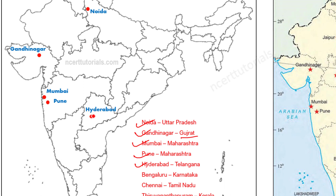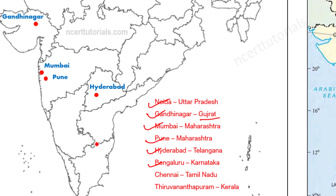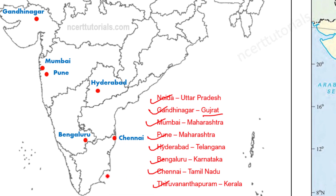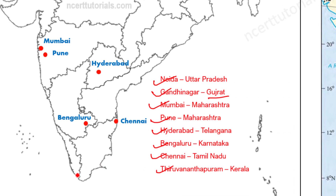Bangalore - Karnataka में है। Karnataka में यह जो space है, थोड़ा नीचे चले आइए और यहीं पे Bangalore मिल जाएगा। इसके बाद Chennai - इसे ढूंढने में problem नहीं होगी अगर map practice करते आ रहे हैं। Chennai port भी है इसलिए एकदम coastal area से लगा हुआ है - यह रहा Chennai। इसके बाद Thiruvananthapuram - इसके लिए Kerala आना पड़ेगा। Kerala एकदम last में है - यहीं पे locate करना है Thiruvananthapuram।